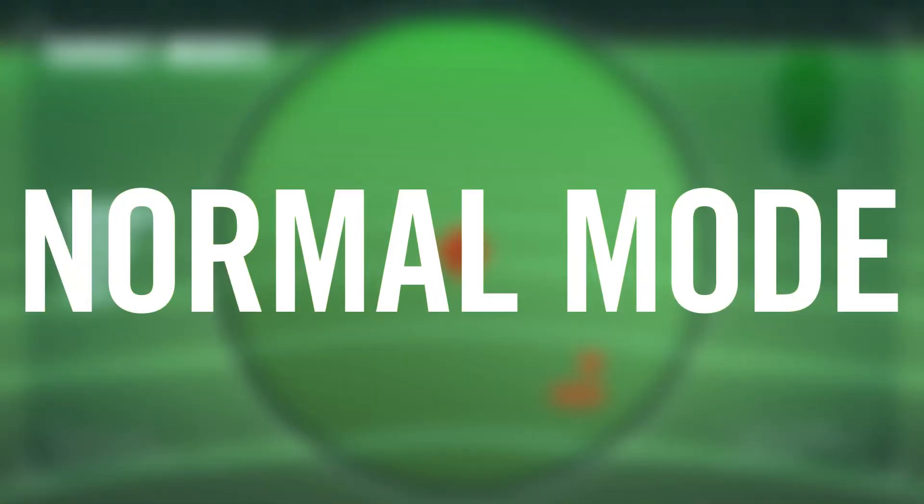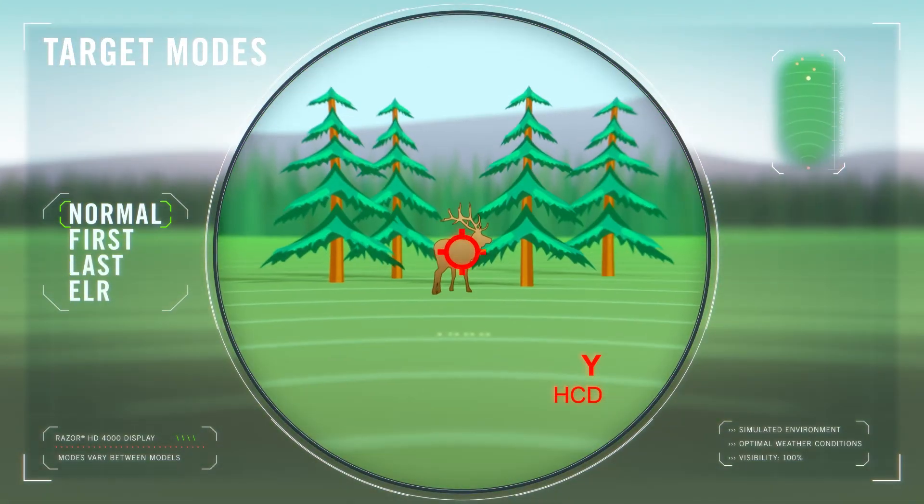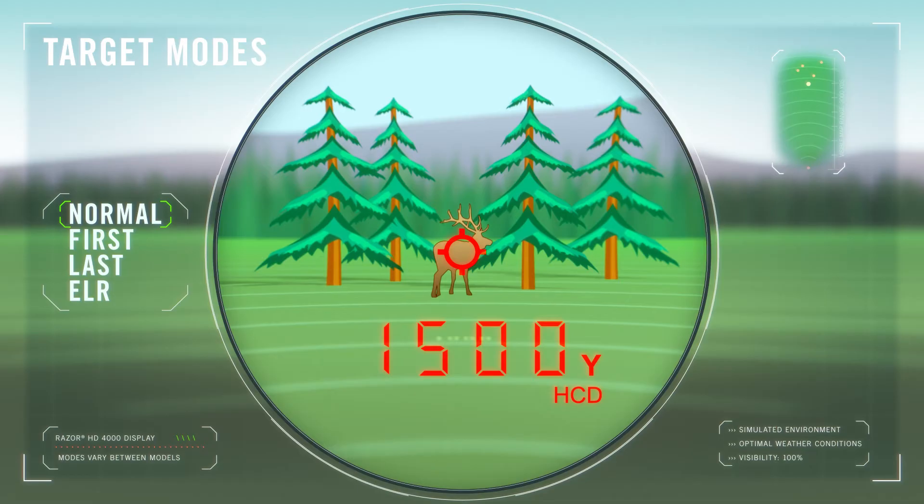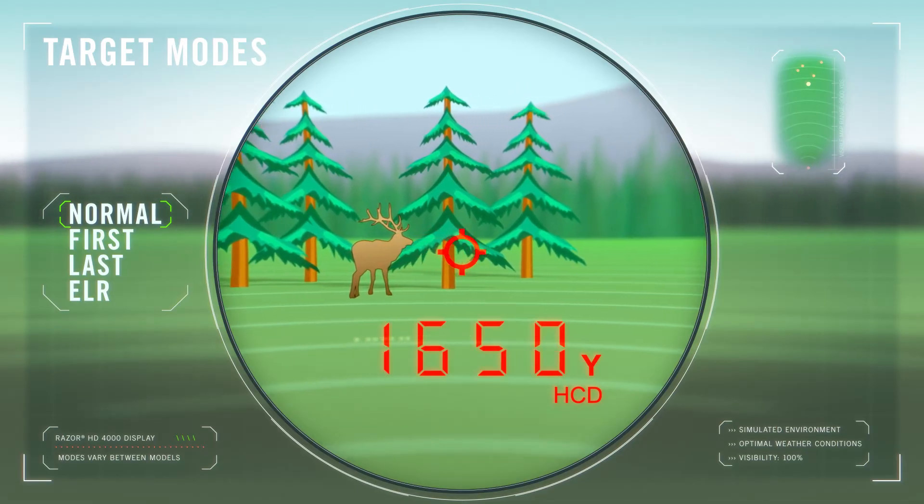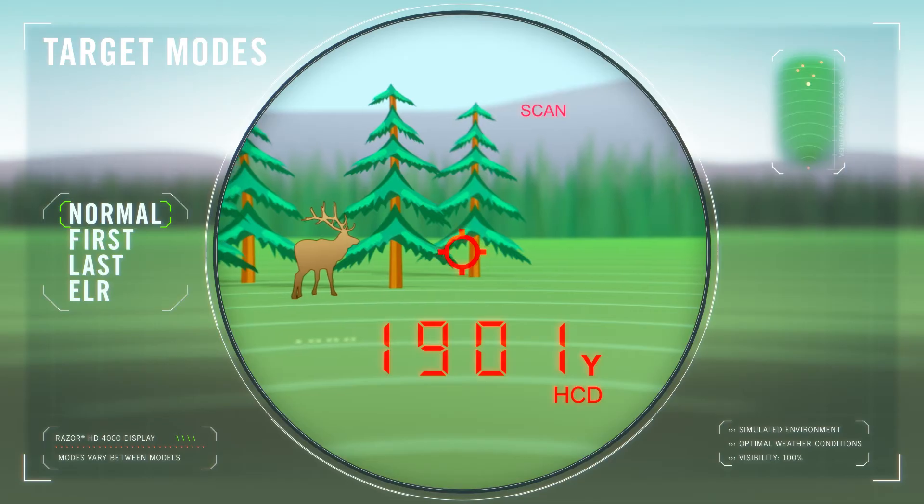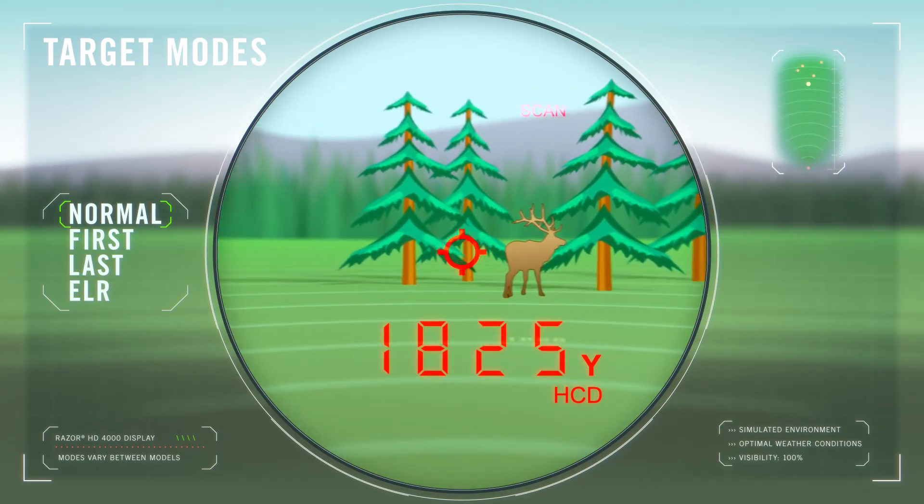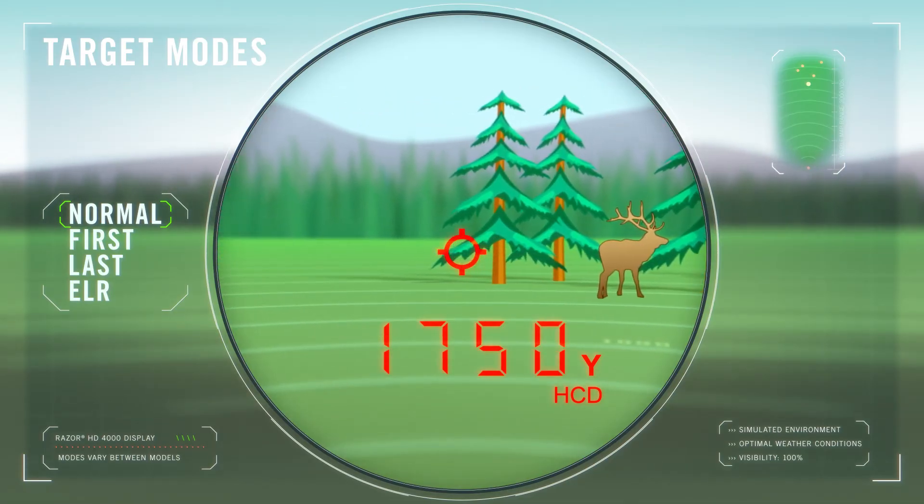The default normal mode is the standard mode that provides the target's range with the strongest range result. Utilizing the scan feature while in normal mode results in a continuously updating distance in the display. Normal mode is recommended for most situations.